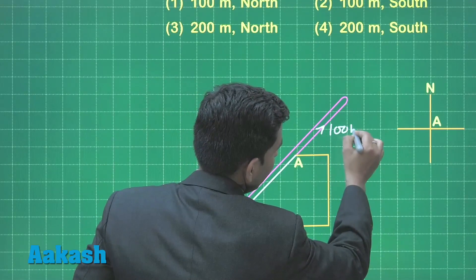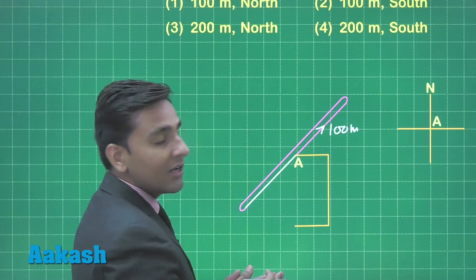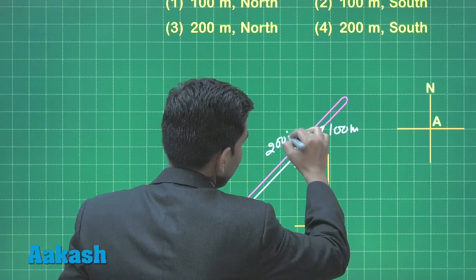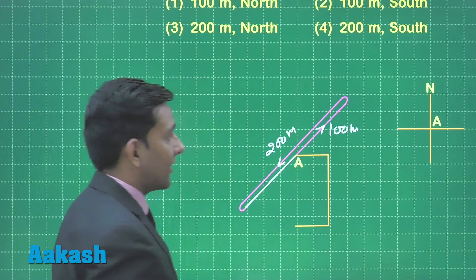So he is moving 100 meter in northeast direction and again 200 meter in southwest direction. So he is moving 200 meter in southwest direction.